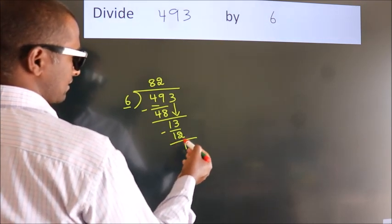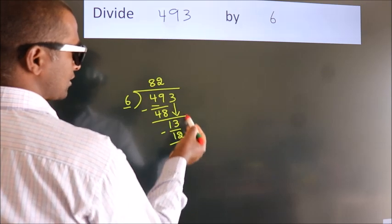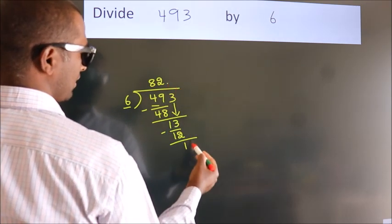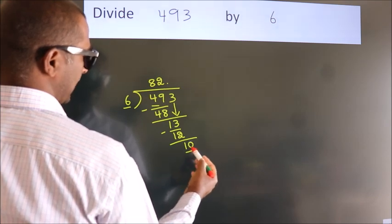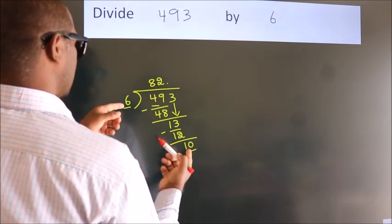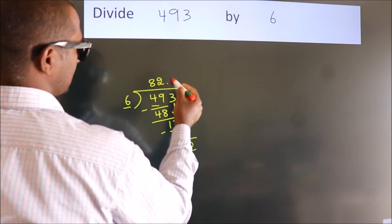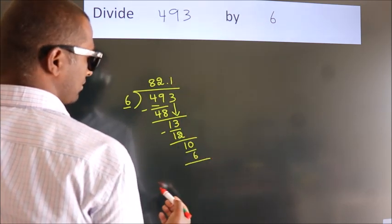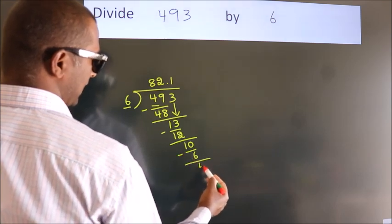After this, no more numbers to bring down. So what we do is put a dot and take 0. So 10. A number close to 10 in the 6 table is 6 times 1, 6. Now we subtract. We get 4.